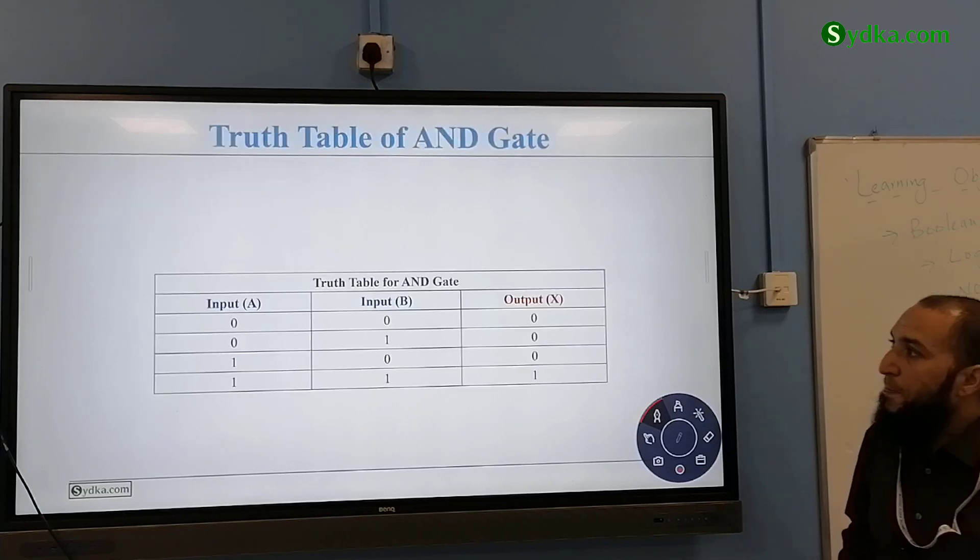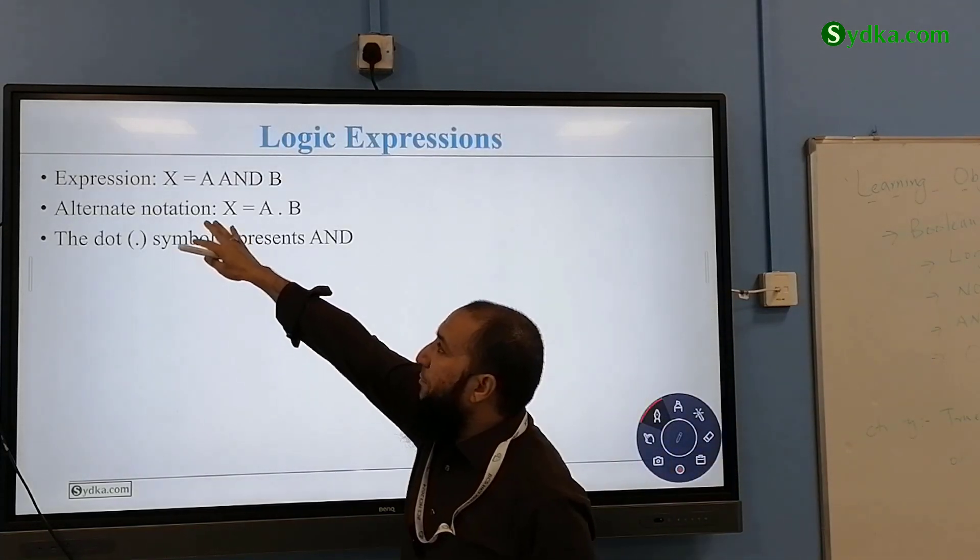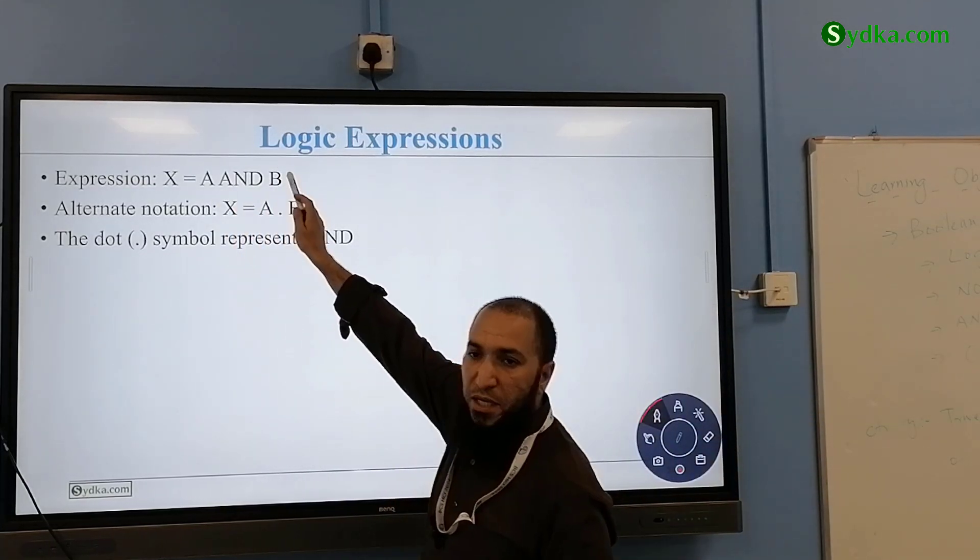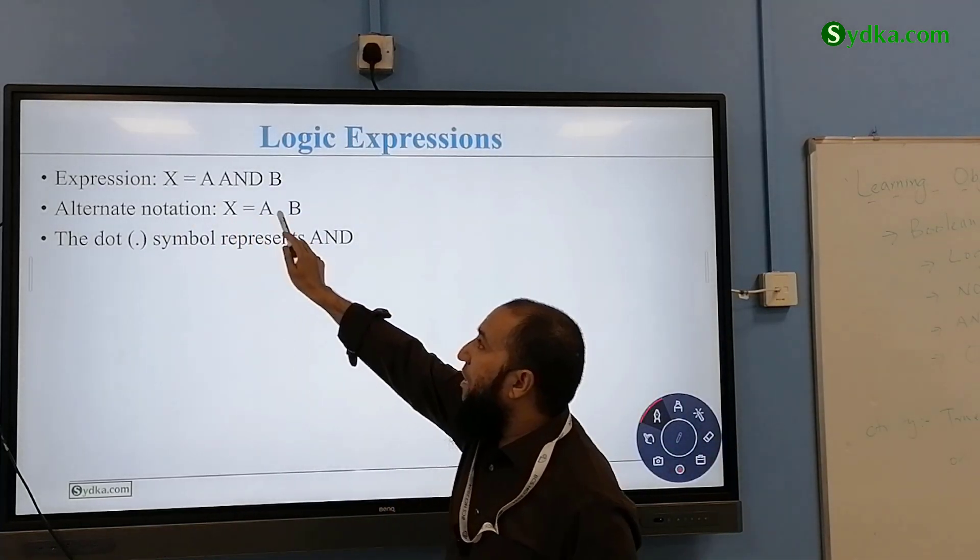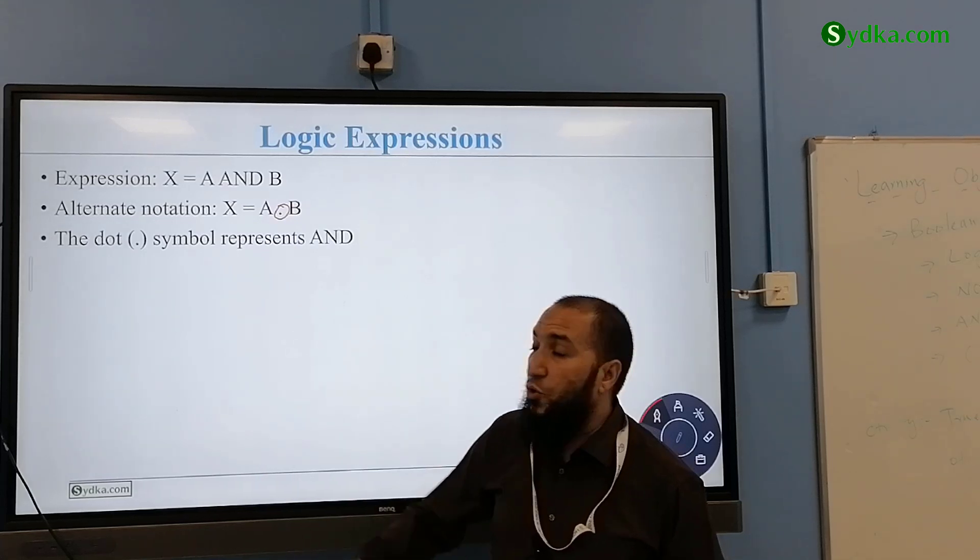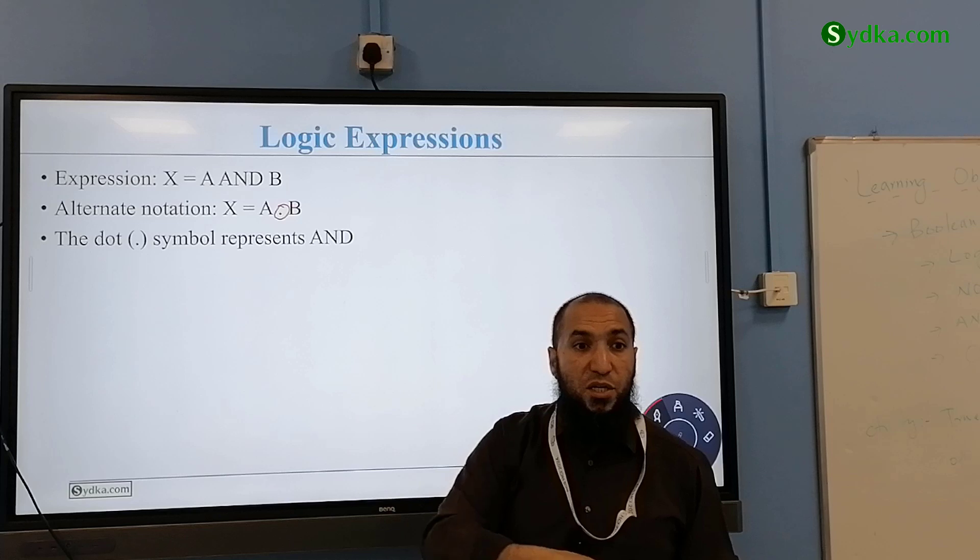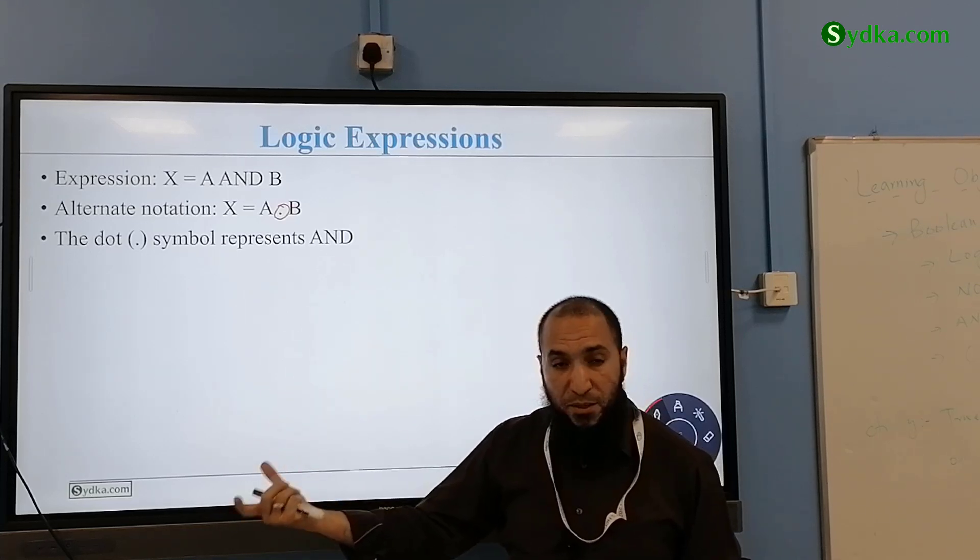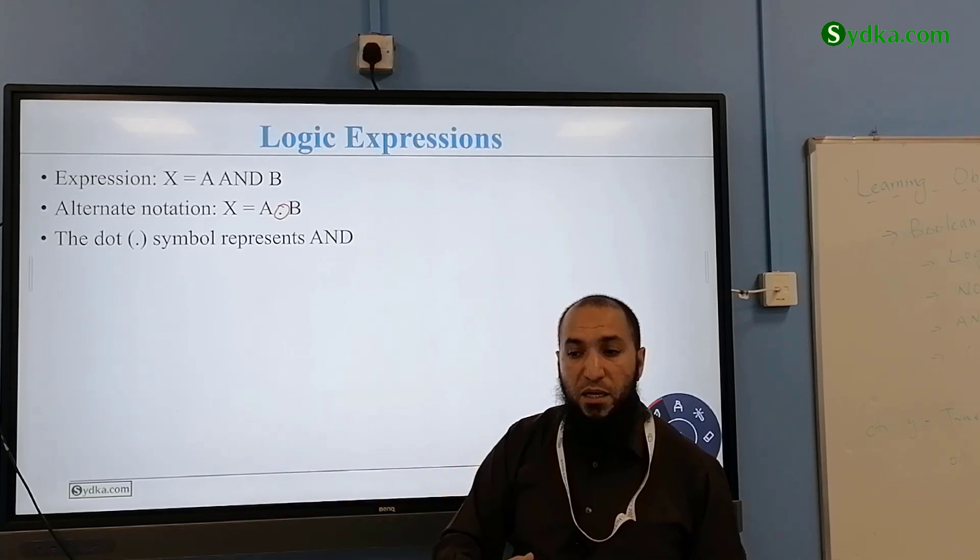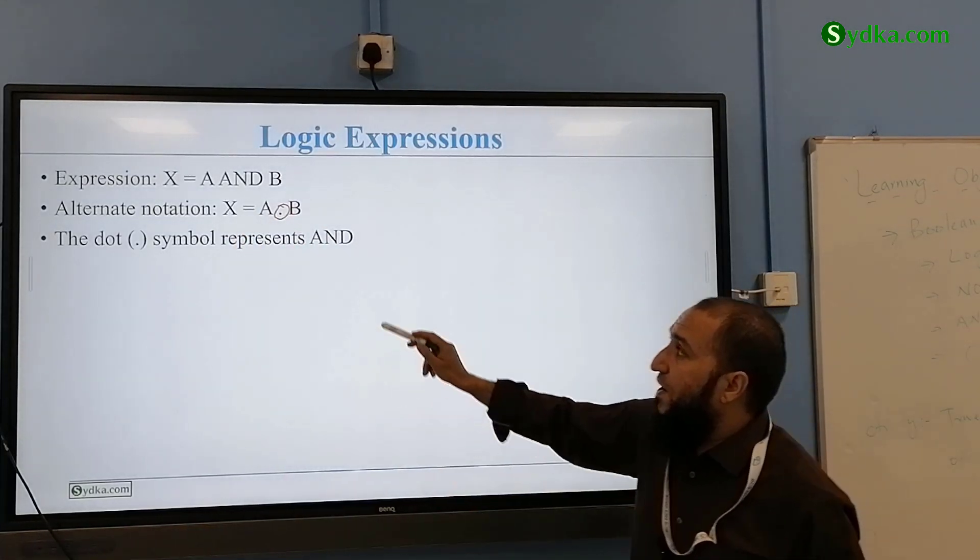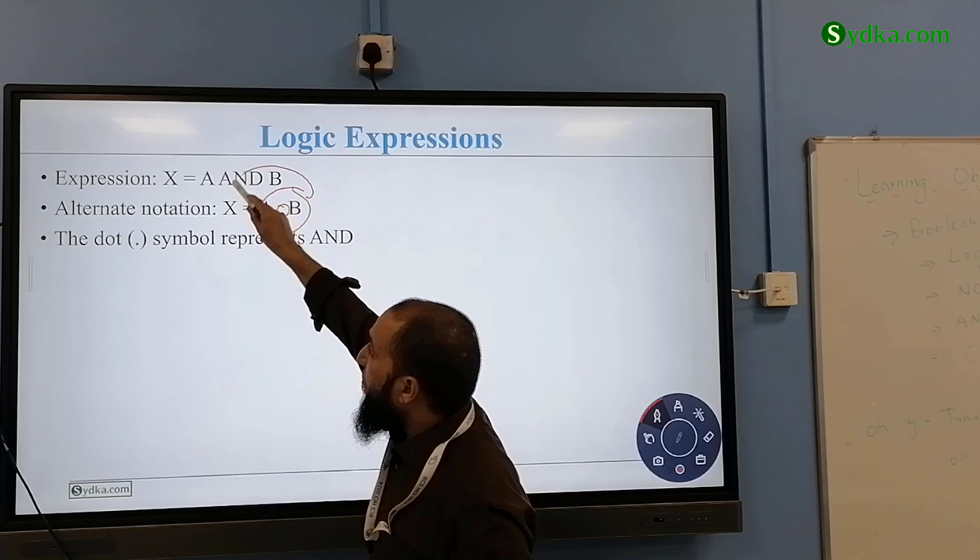The expression, a simple expression, standard one. We have X equals A AND B. Alternative notation is A dot B as well. So you might have an expression like this or this and ask you to change it into one, either make it a symbol or make a table for it. X is equal to A and B, so whatever the value we get from here is going to be assigned to X which is output. The dot symbol represents AND gate.